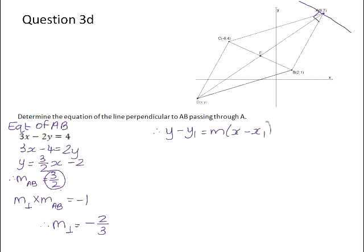We can substitute in the coordinates of A, which are 6 and 7. So that gives us Y minus 7 equals negative 2 thirds times X minus 6.